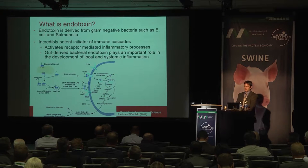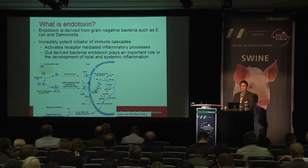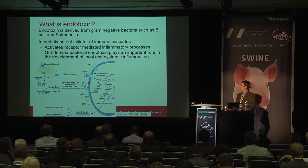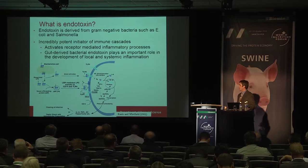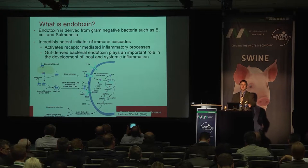So what is an endotoxin? Endotoxins are derived from gram-negative bacteria such as E. coli and Salmonella — just two classes. It is an incredibly potent stimulator of the immune cascade in all mammalian and even avian species. It activates receptor-mediated inflammatory responses; in particular, we're talking about toll-like receptors, which can be based on the plasma membrane of cells or localized inside the cell on the Golgi apparatus and other organelles.